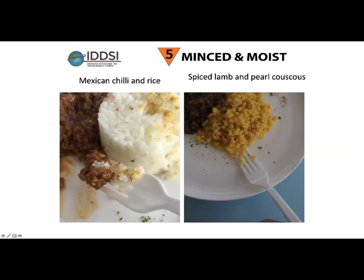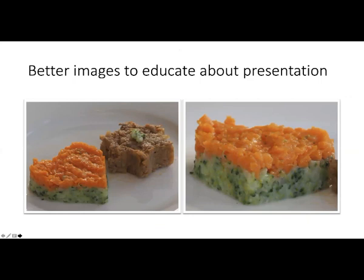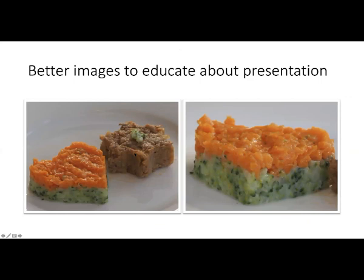Examples of the 4 mm lump size include mince with chilli and rice, or spiced lamb with pearl couscous — when tipped on its side it falls and meets the 4 mm particle size. When served they need to be mixed together to avoid being too dry. Better presentation examples using a biscuit cutter mould layer broccoli, carrot, and meat to make the meal look more attractive.